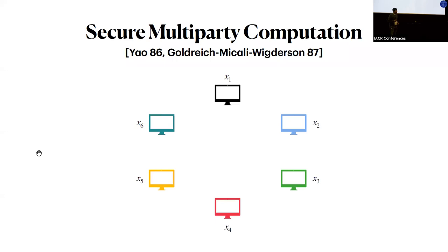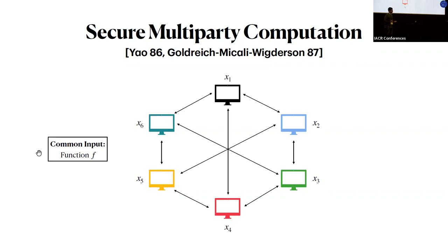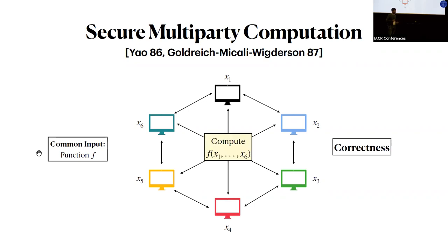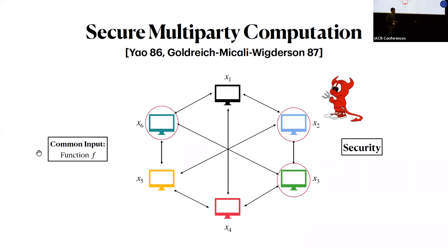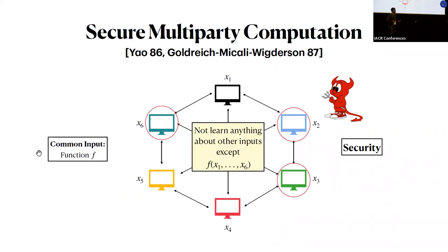Let me start with the customary slide introducing Secure Multiparty Computation. We have several parties, each with its own private input. As a common input, the parties have some description of a function f, and they wish to compute the output of this function applied on their private inputs. The parties run a distributed protocol satisfying correctness — at the end, all parties can compute the output — and security, meaning that even if a subset of parties is corrupted by a centralized adversary, the corrupted parties jointly learn nothing about the honest parties' inputs except what is leaked by the output.